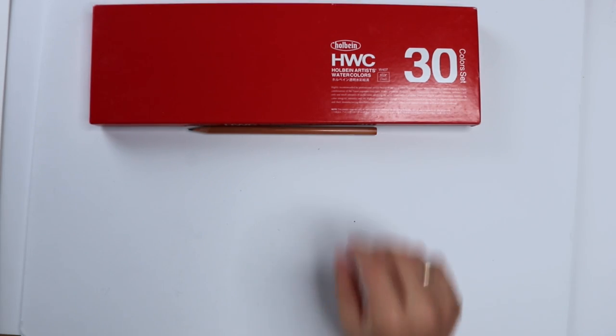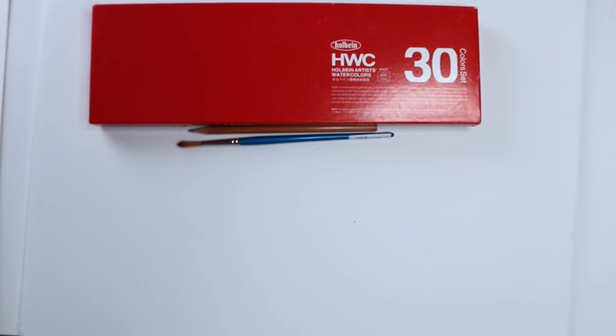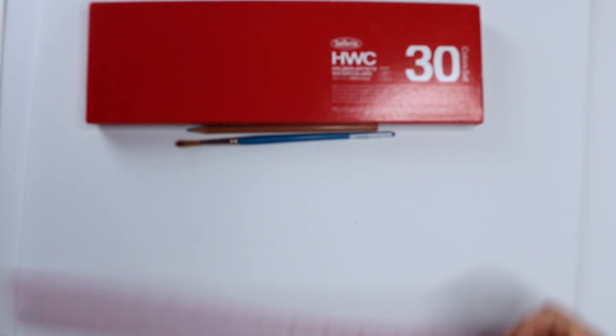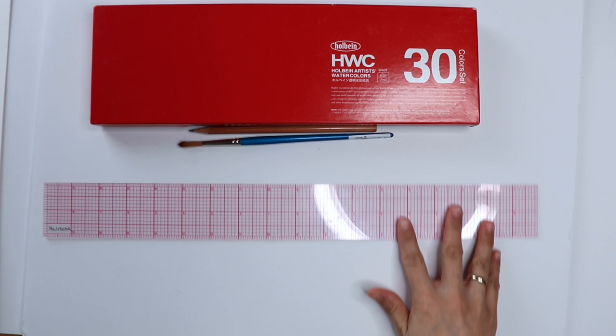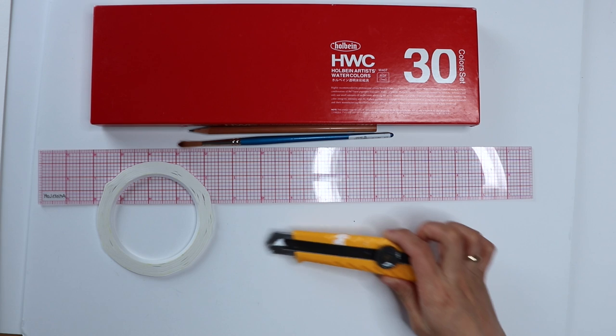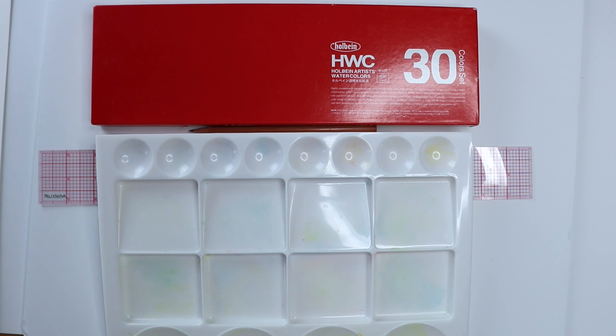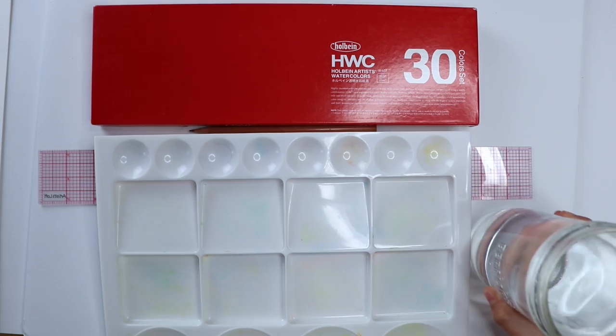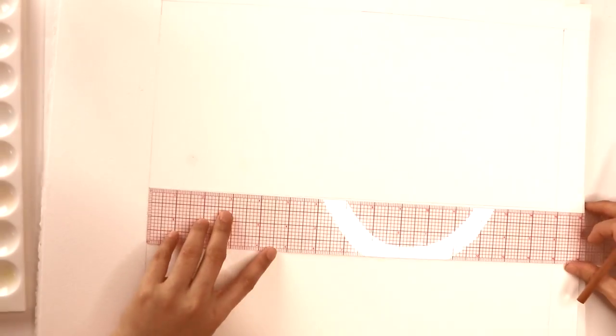Any type of watercolor pigment set. I am using Holbein Watercolor 30 pigment set. A pencil, a watercolor brush, a ruler, a roll of masking tape, a knife or a pair of scissors, a palette, some water for cleaning the brush, a color wheel if you have one. You can use it as a reference to understand the color of the pigments. You also need a calculator and a compass to help you with the drawing. Now let's get started.